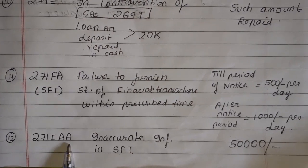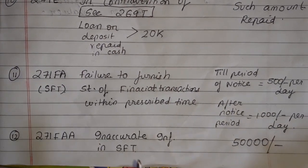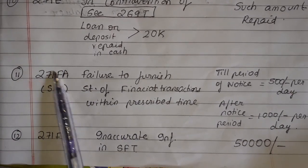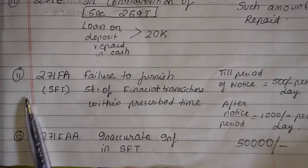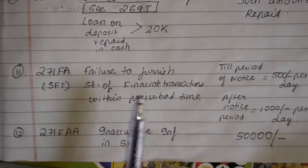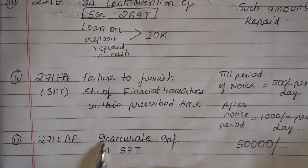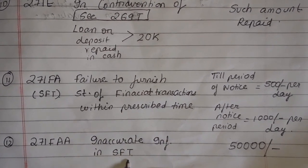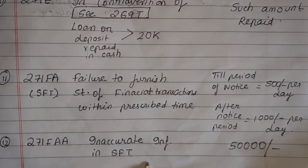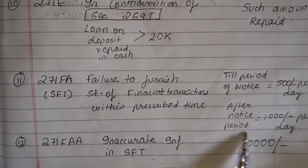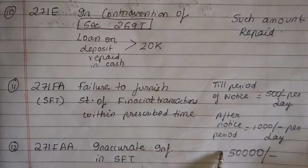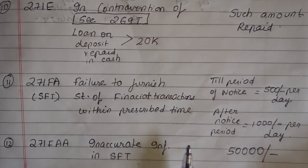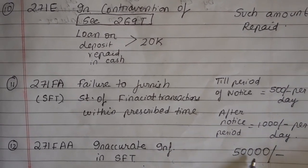Number 12: Section 271FAA — Inaccurate information in the Statement of Financial Transactions (SFT). Section 271FA was about failure to file SFT (₹500/₹1,000 per day). Section 271FAA is about filing SFT but with inaccurate or wrong information. In this case, the penalty is ₹50,000. So: failing to file SFT is 271FA with a daily penalty, but giving wrong information in SFT is 271FAA with a flat ₹50,000 penalty.